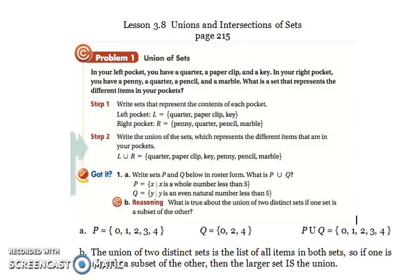So they got it. Part A: Write sets P and Q below in roster form. And what is P union Q? Okay. So roster form means list. So x is a whole number less than five. Whole numbers include zero. So zero, one, two, three, four. It doesn't say less than or equal to five.